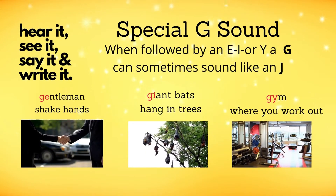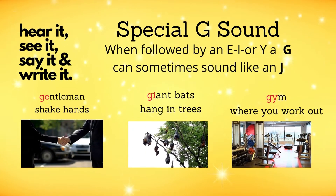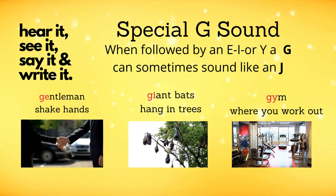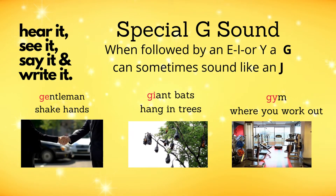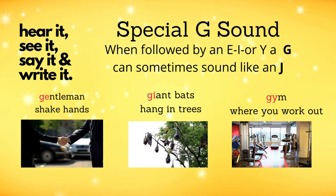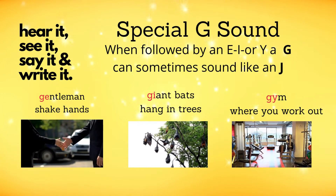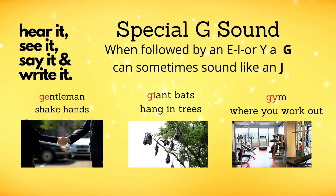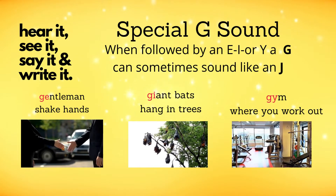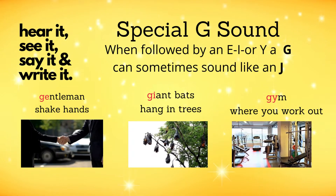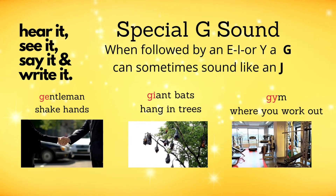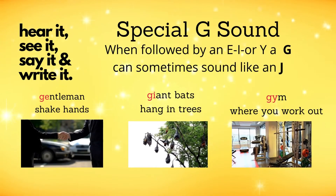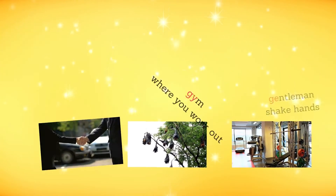The special sounds of G. When G is followed by an E, an I, or a Y, the G can sometimes sound like a J, as in the words gentleman, giant, and gym. For example: gentlemen shake hands, giant bats hang in trees, gym — where you work out.